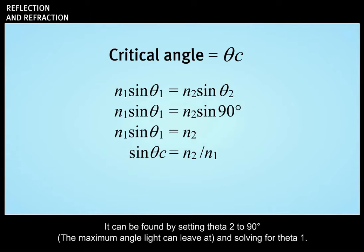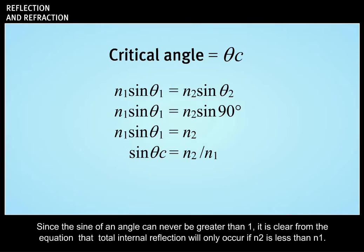The smallest angle for which one gets total internal reflection is called the critical angle, abbreviated as theta sub c. It can be found by setting theta 2 to 90 degrees, the maximum angle light can leave at, and solving for theta 1. Since the sine of an angle can never be greater than 1, it is clear from the equation that total internal reflection will only occur if n sub 2 is less than n sub 1.